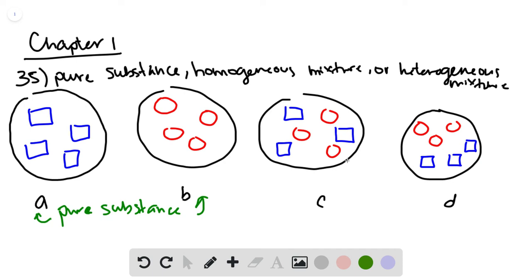So see here, the blue and red particles are mixed pretty much evenly, which tells us that that's a homogenous mixture.